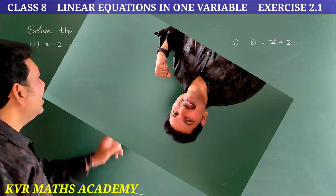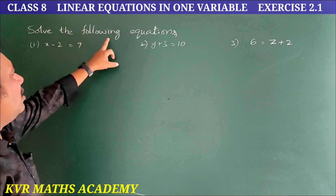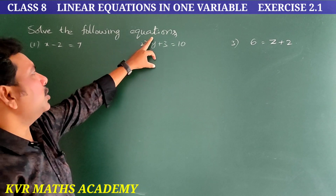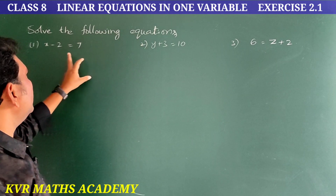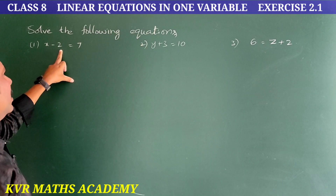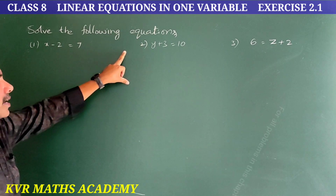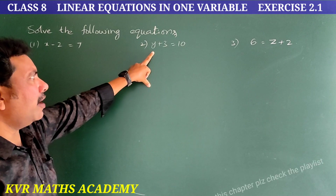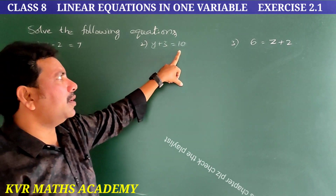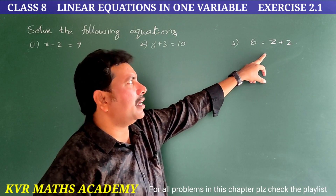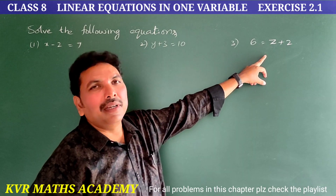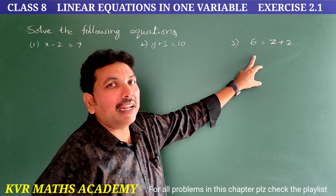Solve the following equations. First one: x minus 2 is equal to 7. Second one: y plus 3 is equal to 10. Third one: 6 is equal to z plus 2. Totally 12 problems have been given.